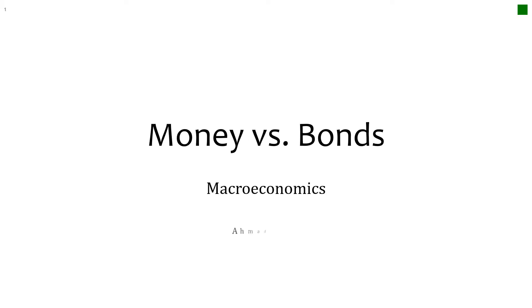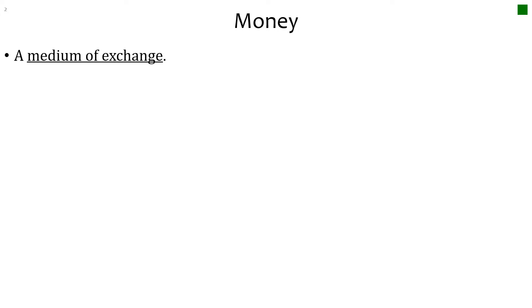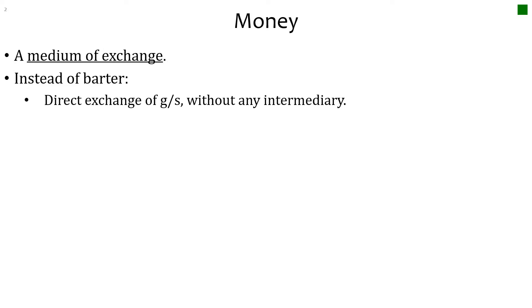Today we're going to talk about money in contrast with bonds. Some of this will be review and some will be new. So what is money? How do you define money? One student once said money is everything — but money is simply a medium of exchange. It's what we use for transactions, instead of barter, which is a direct exchange of goods and services without an intermediary.